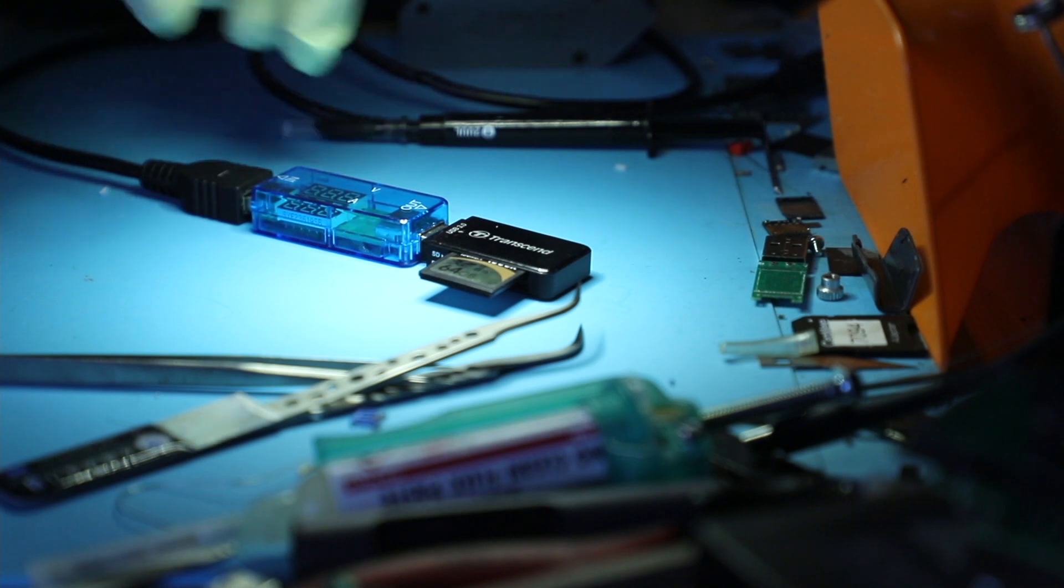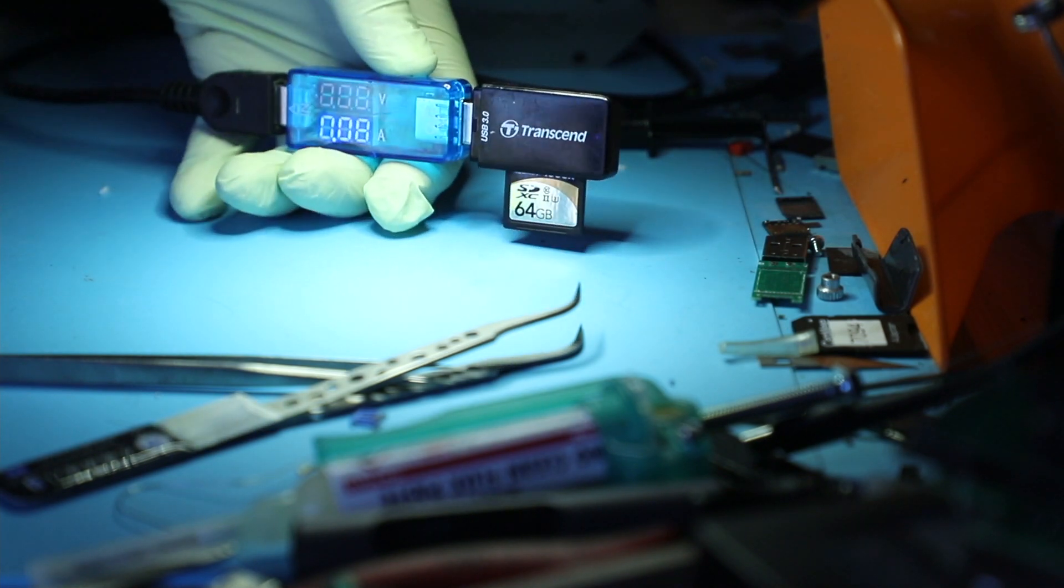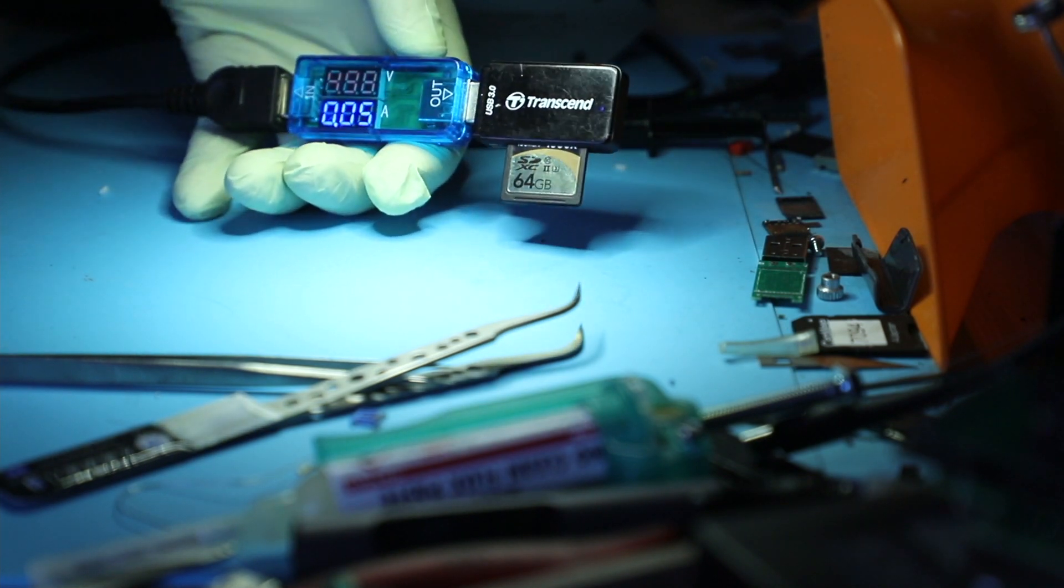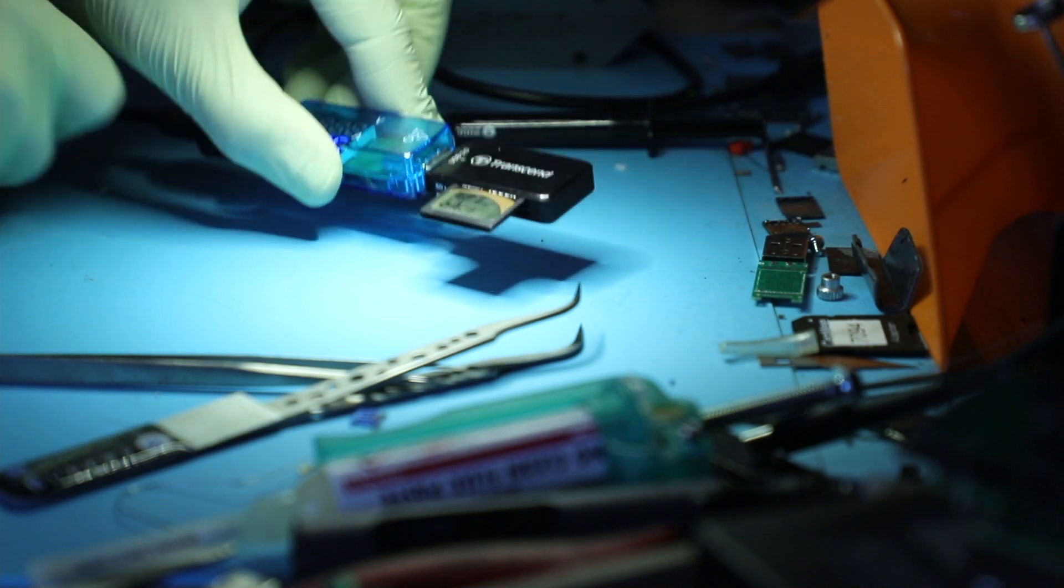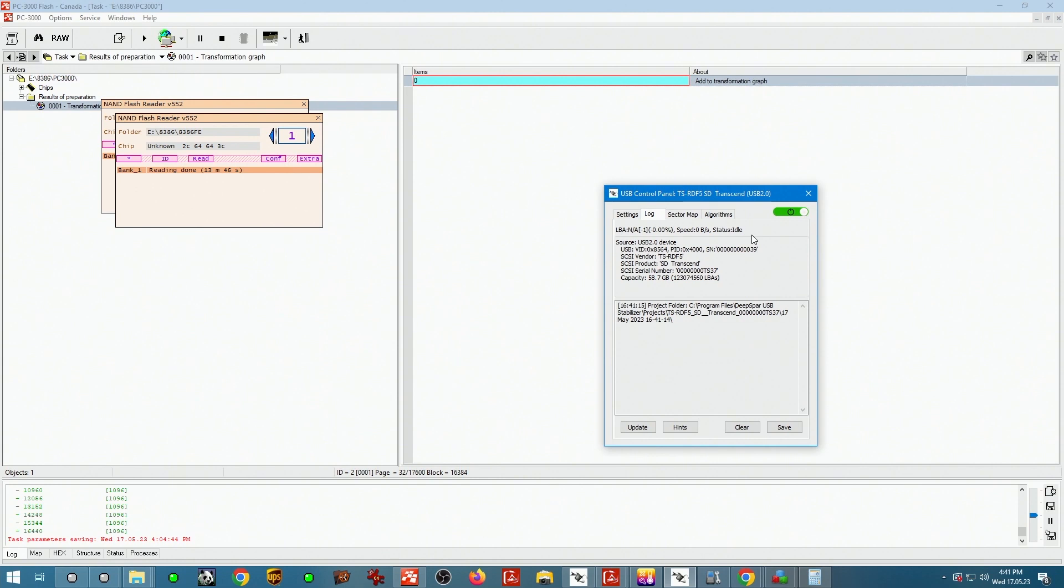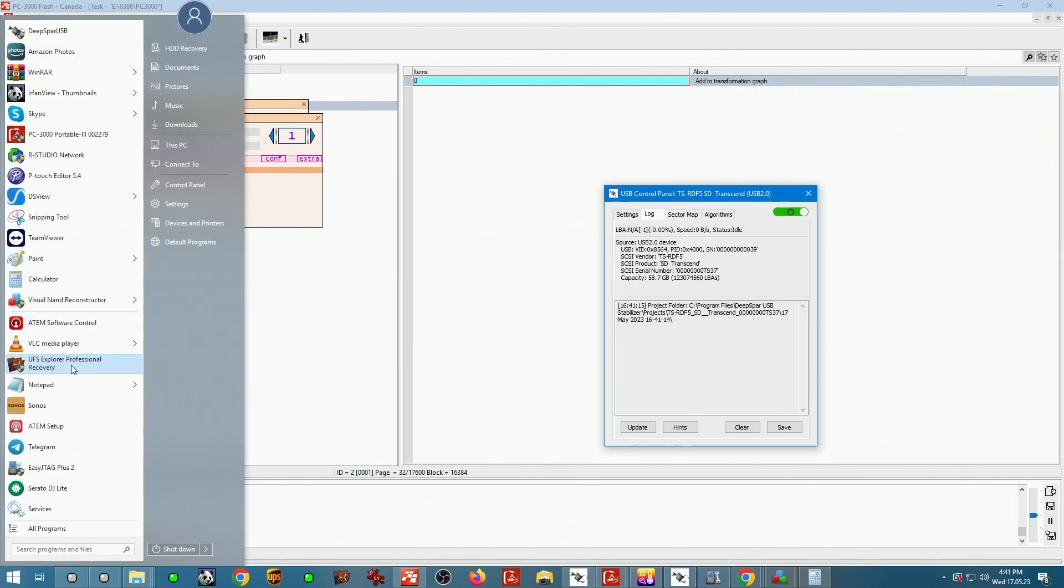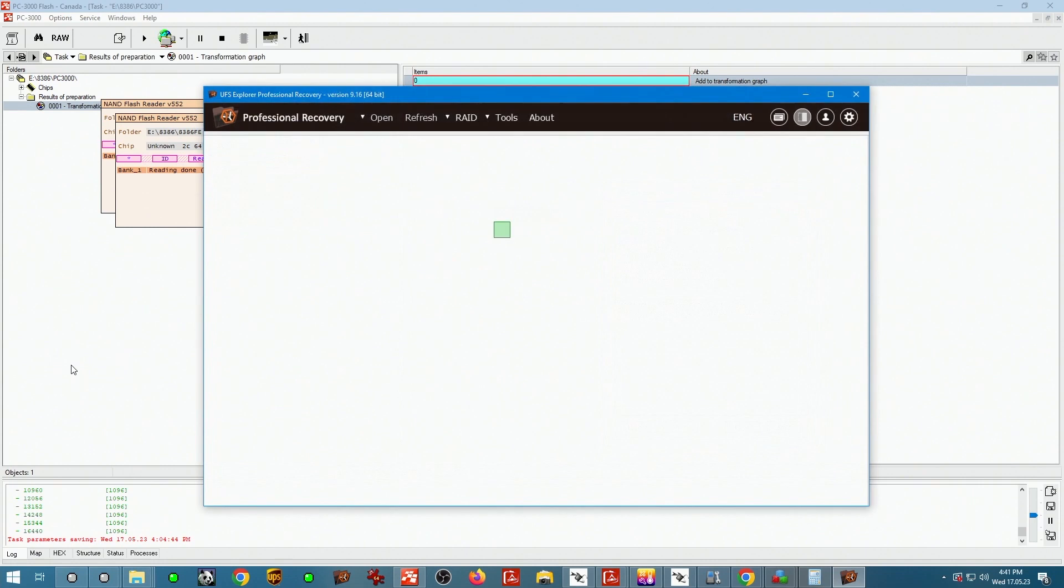I'll plug this in. Let's go ahead and power on our USB control panel. Look at this, our consumption level is at 50 milliamps. When we're looking at our screen right here, we no longer see 7.6 gigs, we see 58.7, and that's the correct size. We're not out of the woods yet.